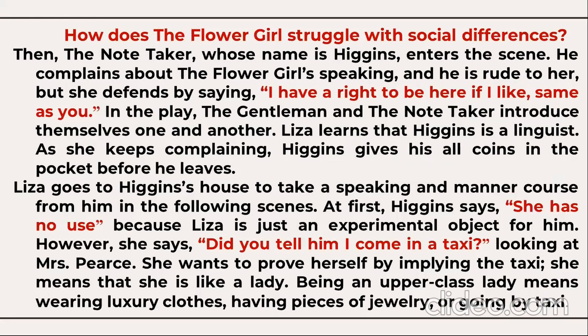The note-taker, Higgins, enters the scene, complains about the flower girl's manner of speaking, and is rude to her — but she defends herself, saying 'I have a right to be here if I like, same as you.' Eliza learns that Higgins is a phonetician. Higgins gives all the coins in his pocket before he leaves. Eliza then goes to Higgins' house to take a speaking and manner course from him. At first Higgins says she has no use since Eliza is just an experimental object. However, she says 'Did you tell him I came in a taxi?' — trying to prove herself to Mrs. Pierce, the housekeeper. Coming by taxi implies she considers herself a lady, since being upper class means wearing luxury clothes, jewelry, and going by taxi.